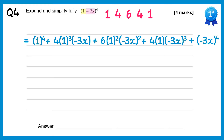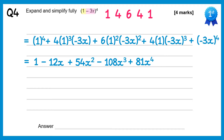So let's simplify: 1 to the power 4 is just 1. 1 cubed times 4 is 4, times negative 3 gives negative 12x. Negative 3x all squared is positive 9x squared, times 6 gives plus 54x squared. Negative 3x all cubed is negative 27x cubed, times 4 gives negative 108x cubed. And negative 3x to the power 4 is positive 81x to the power 4.